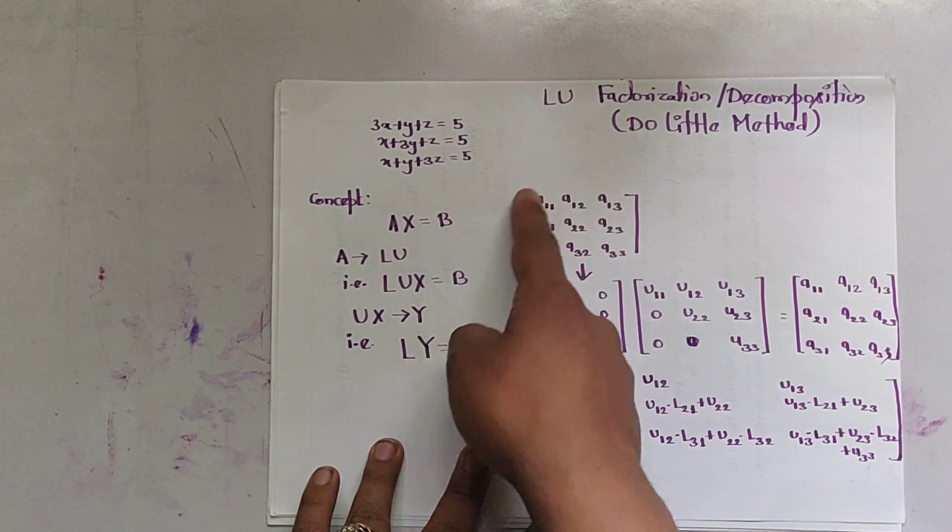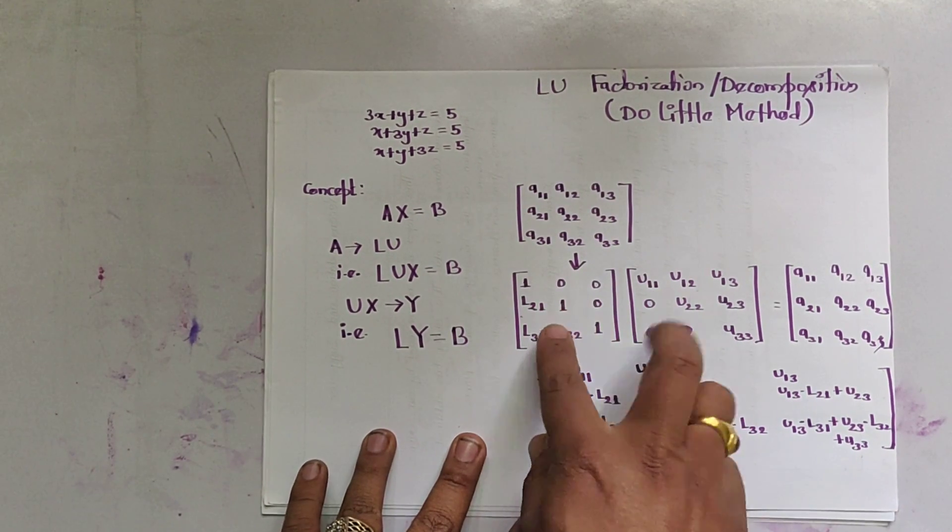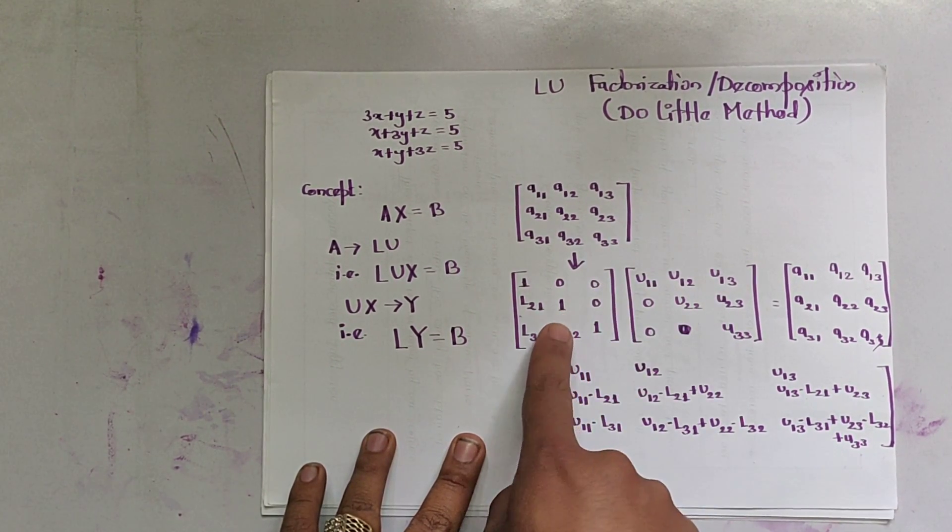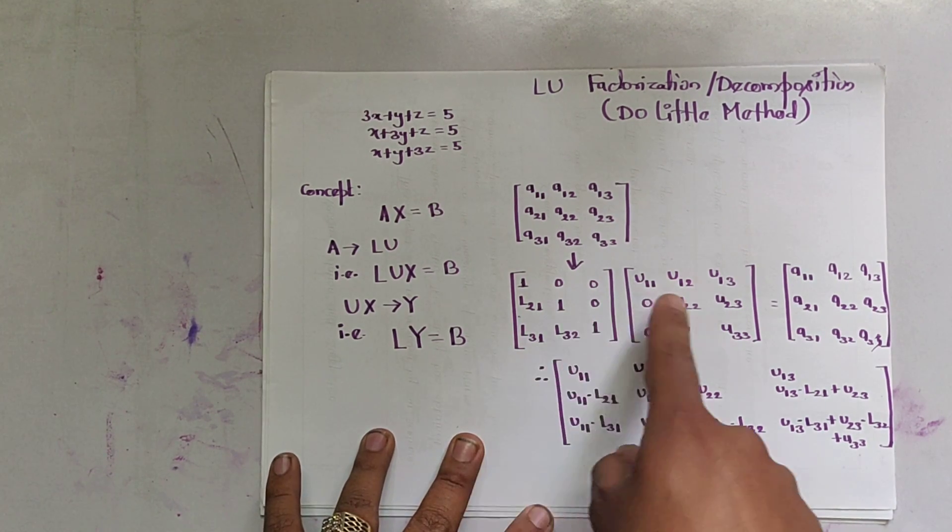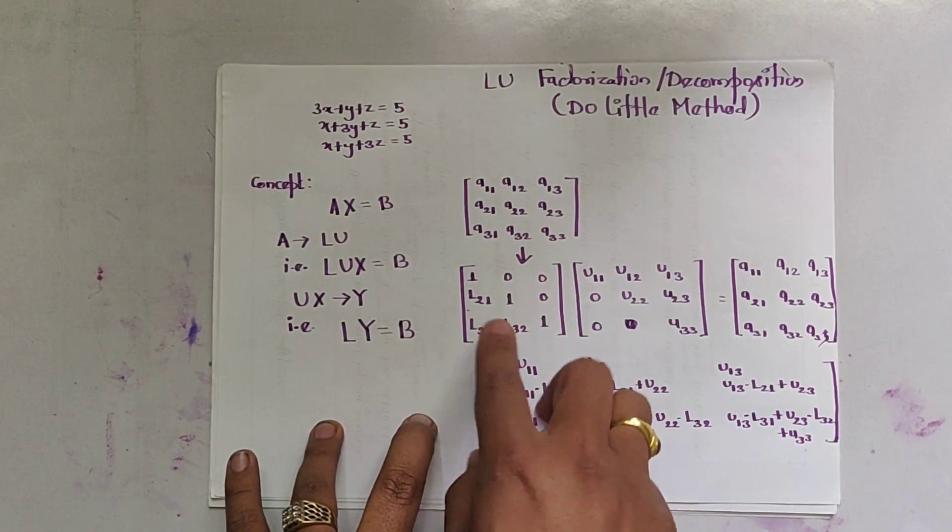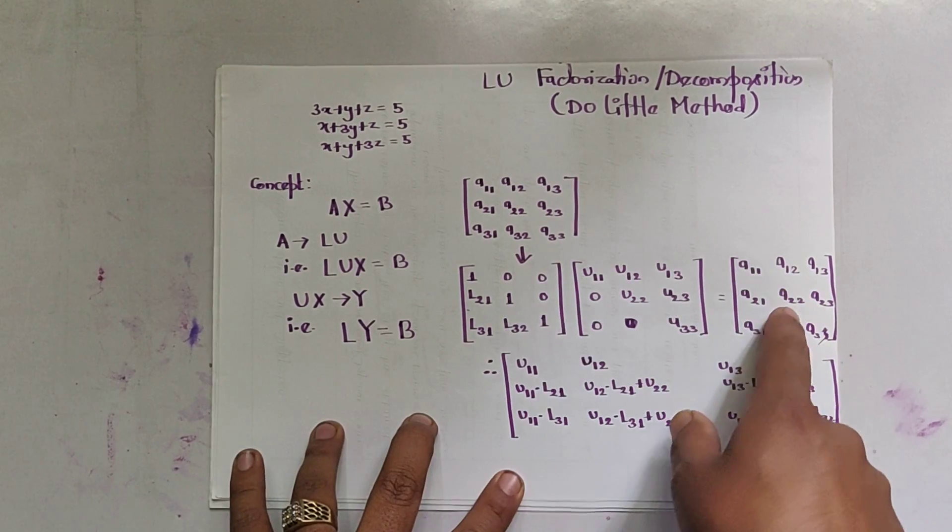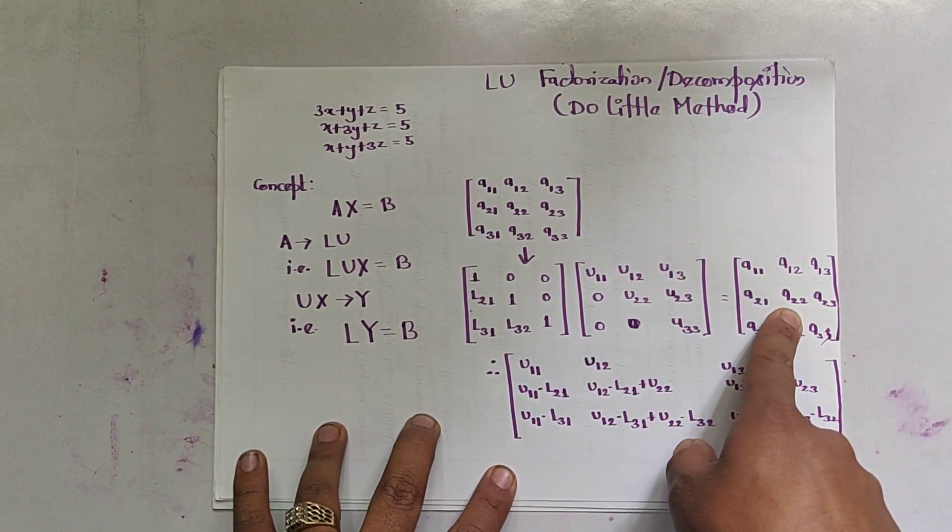We have to decompose this A matrix into two matrices: L matrix and U matrix, lower matrix and upper matrix. The multiple of these two gives matrix A.